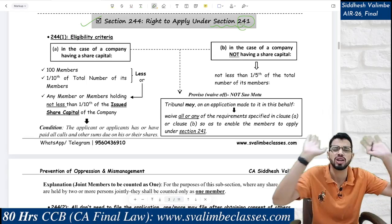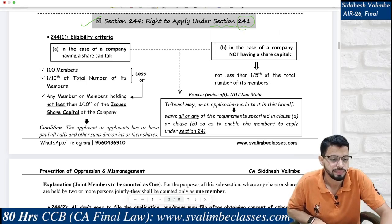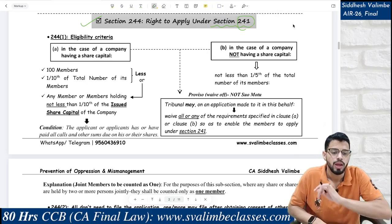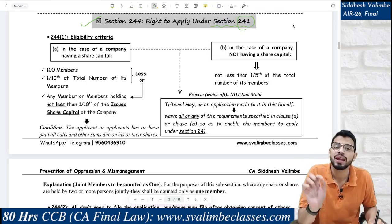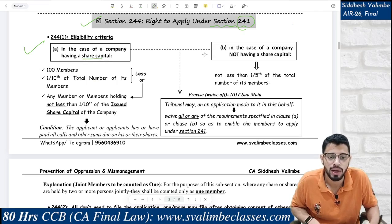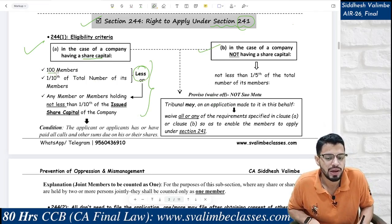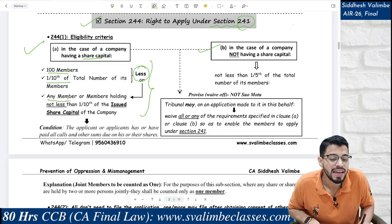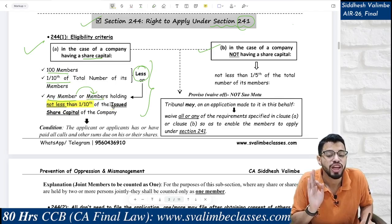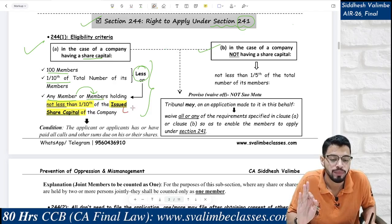You have to fulfill the eligibility criteria under Section 244. Now it depends whether the company has a share capital or not. If it has share capital, then you have to see the least of: 100 members; 1/10th of the total number of members; or any member or members holding minimum 1/10th of the issued share capital. Note: not paid-up, not subscribed — the word to use is 'issued.' If the company has no share capital, then minimum 1/5th of the total number of members is required.